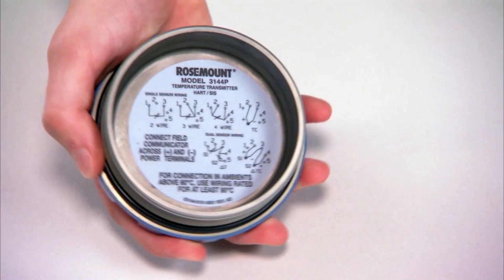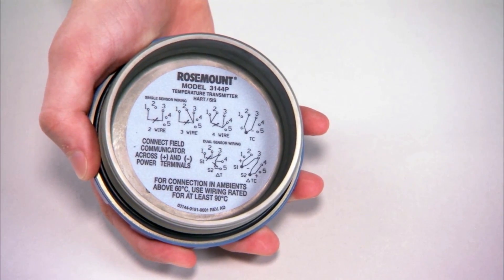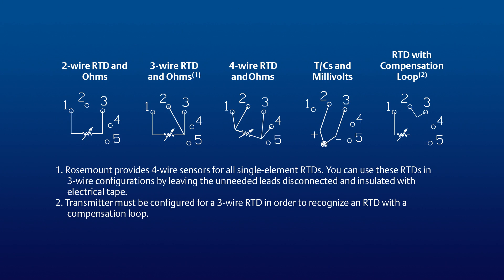Note that inside the transmitter's back cover are wiring diagrams printed for reference. These wiring diagrams are also provided inside the Quick Start Guide.